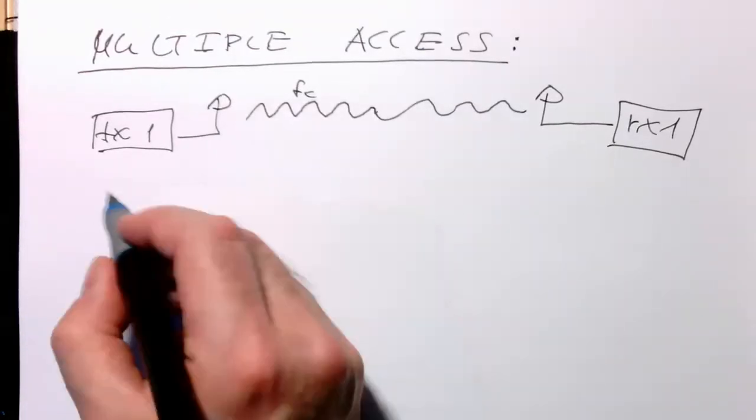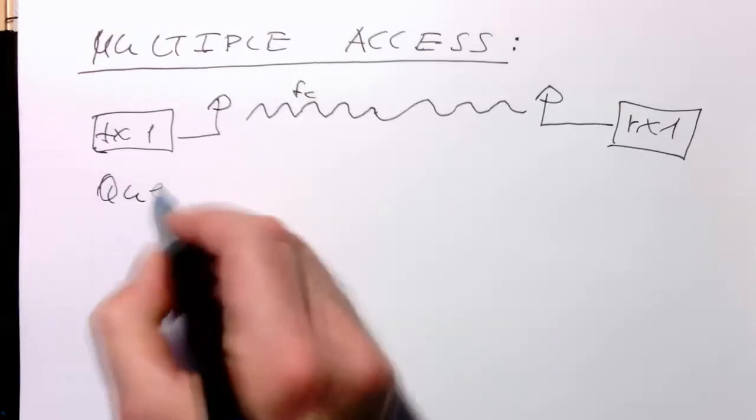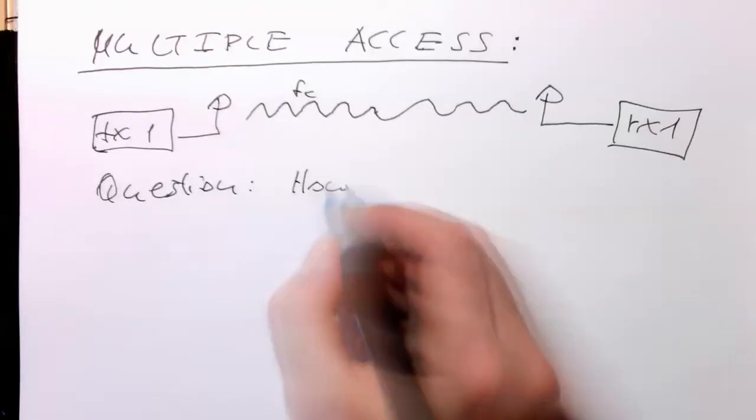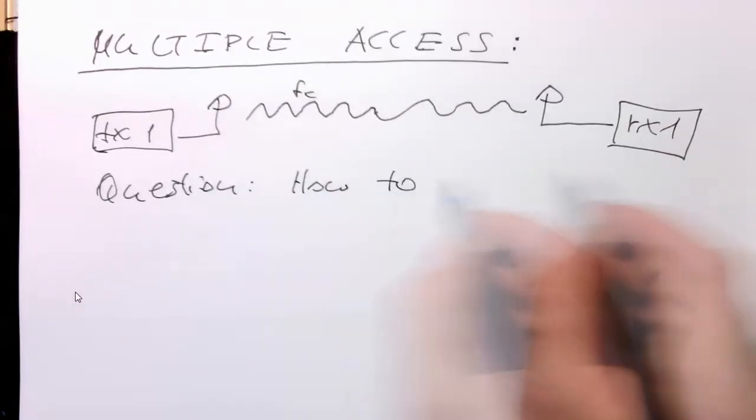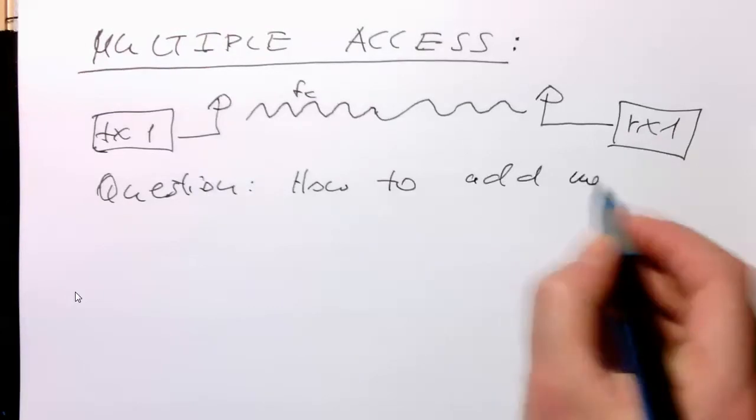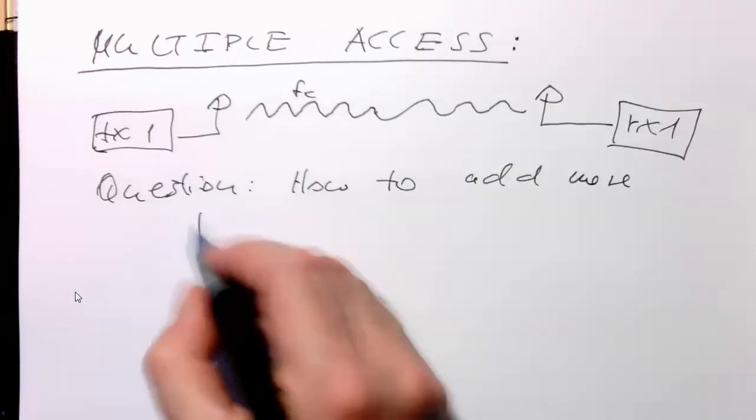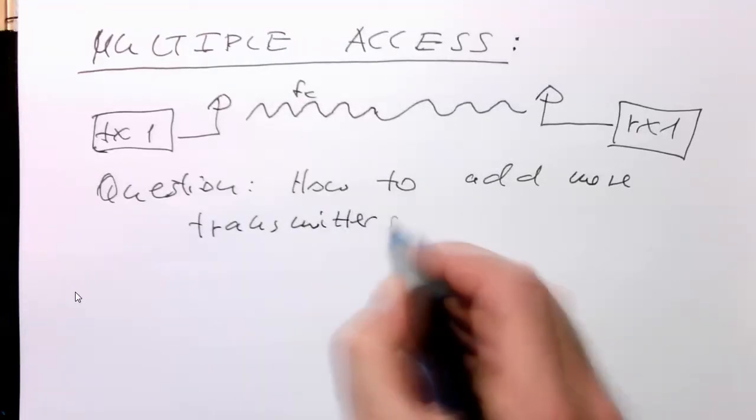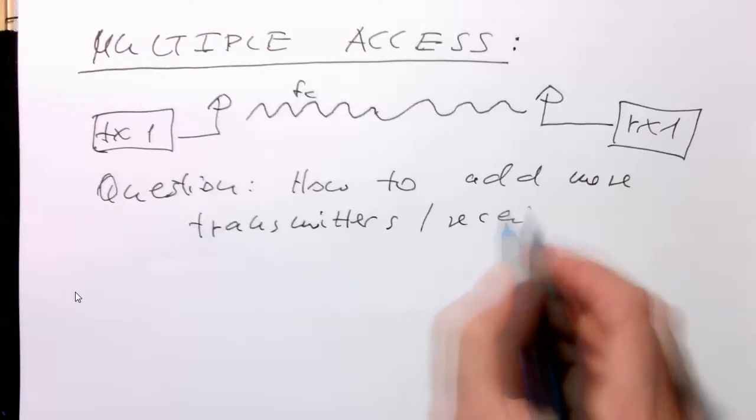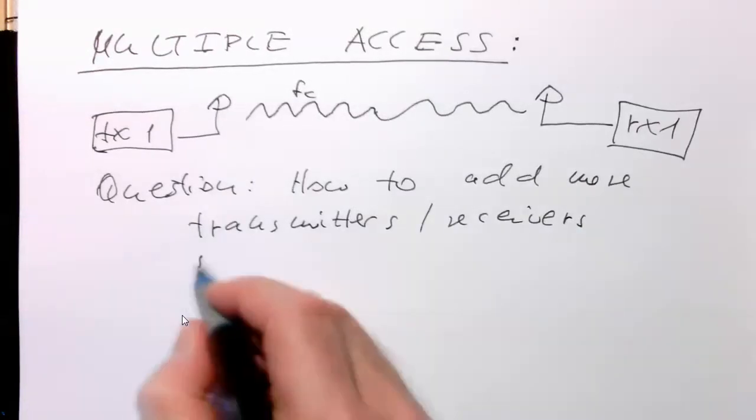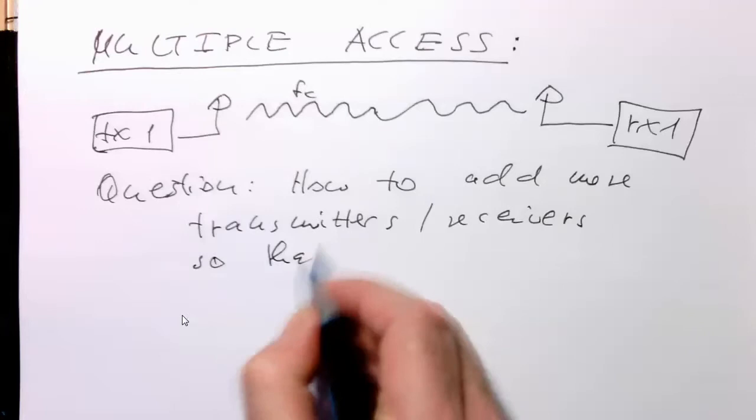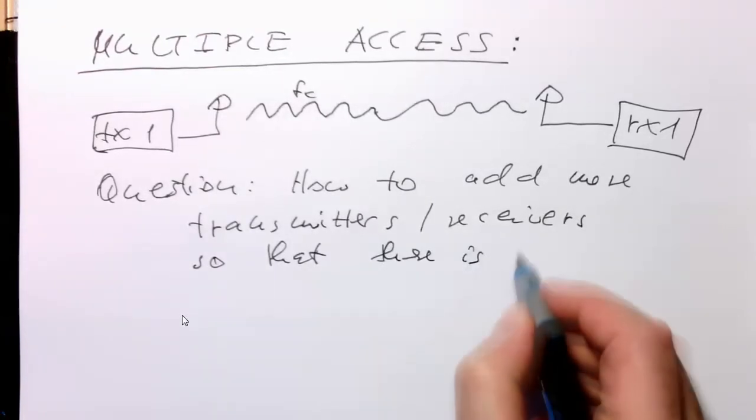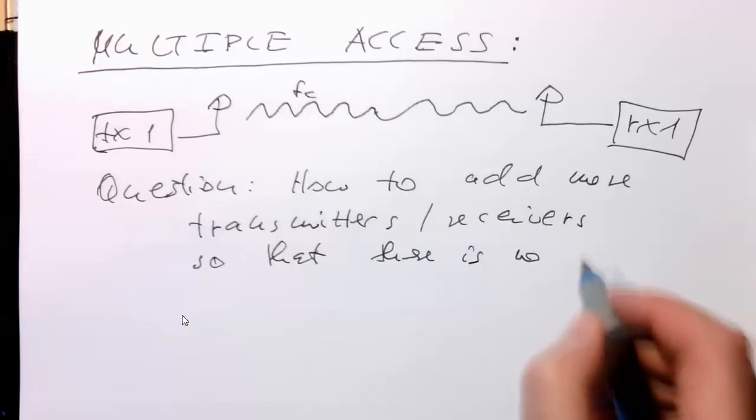So the question is now how to add more transmitters and receivers so that there's no or minimal interference.